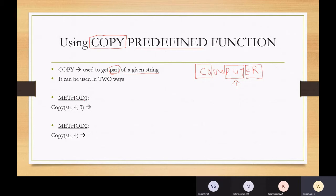There are two ways we can use copy. The first method has three parameters. One, two, three. So the first method in using copy is to use three parameters. The second method has only two parameters.